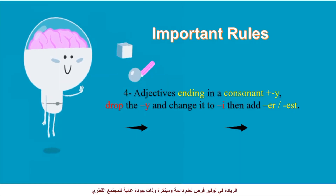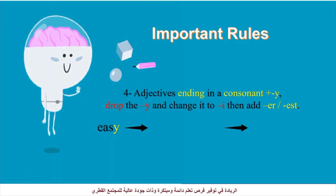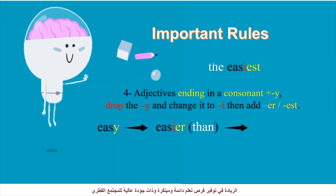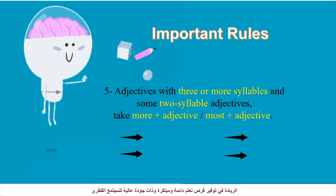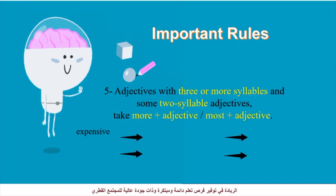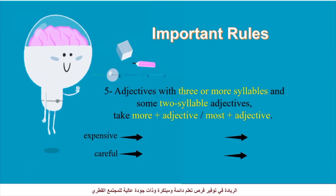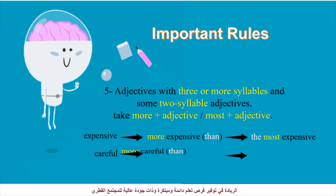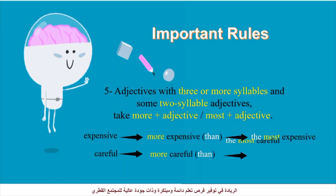Adjectives ending in a consonant plus Y: we drop the Y, change it to I, then add ER and EST. So: easy — easier than — the easiest. Adjectives with three or more syllables, like expensive, and some two-syllable adjectives, like careful, require MORE and MOST before them. So: expensive — more expensive than — the most expensive; careful — more careful than — the most careful.